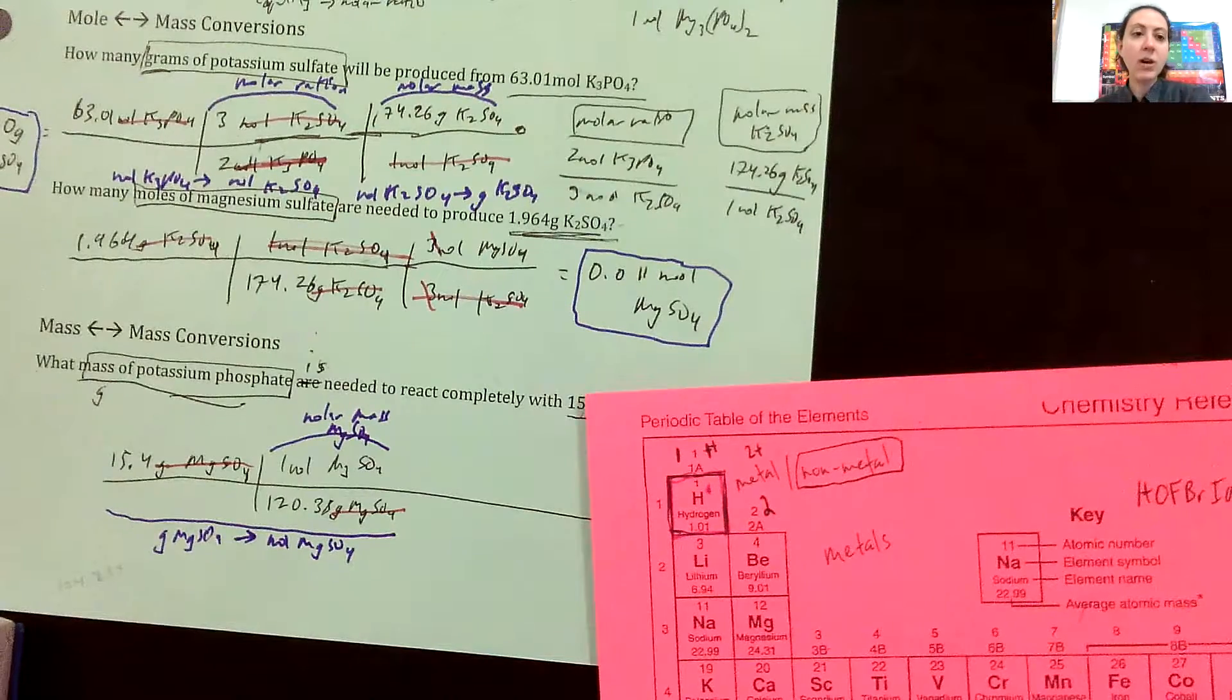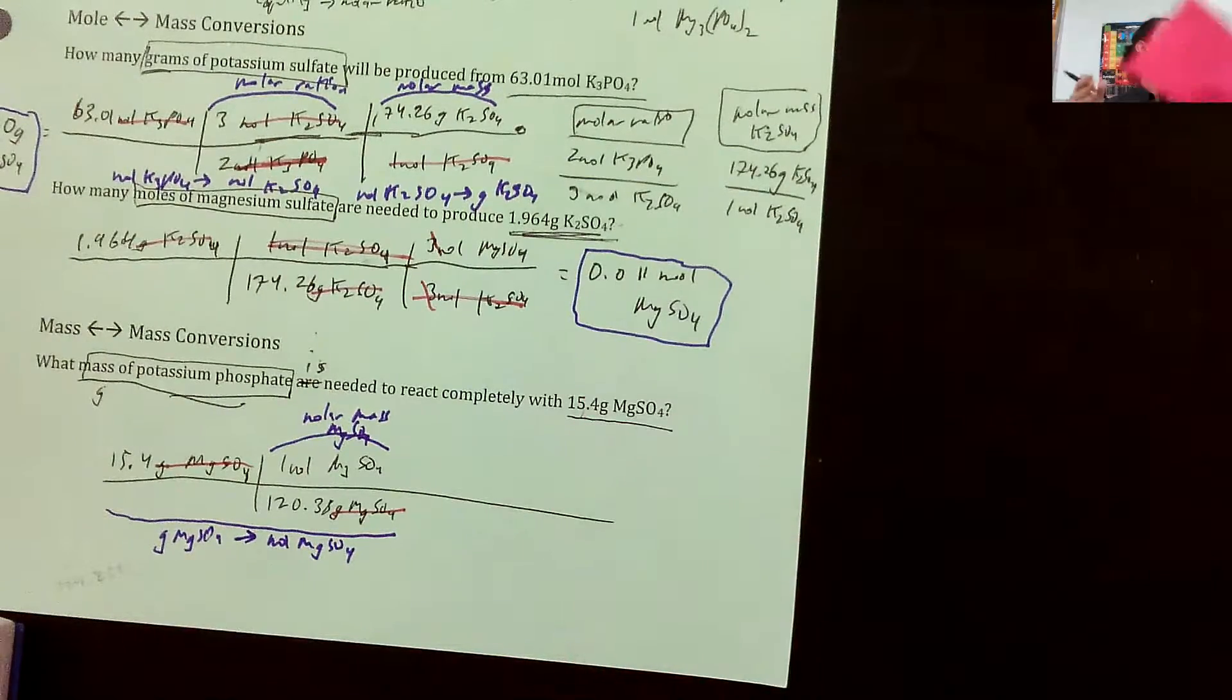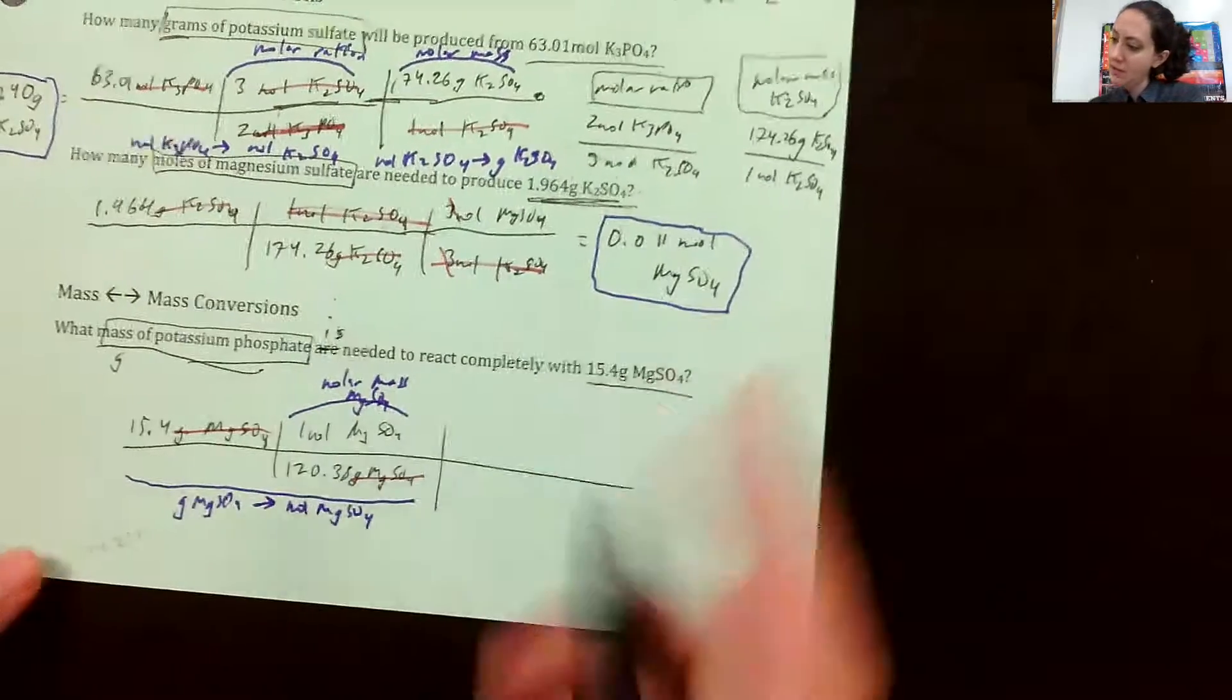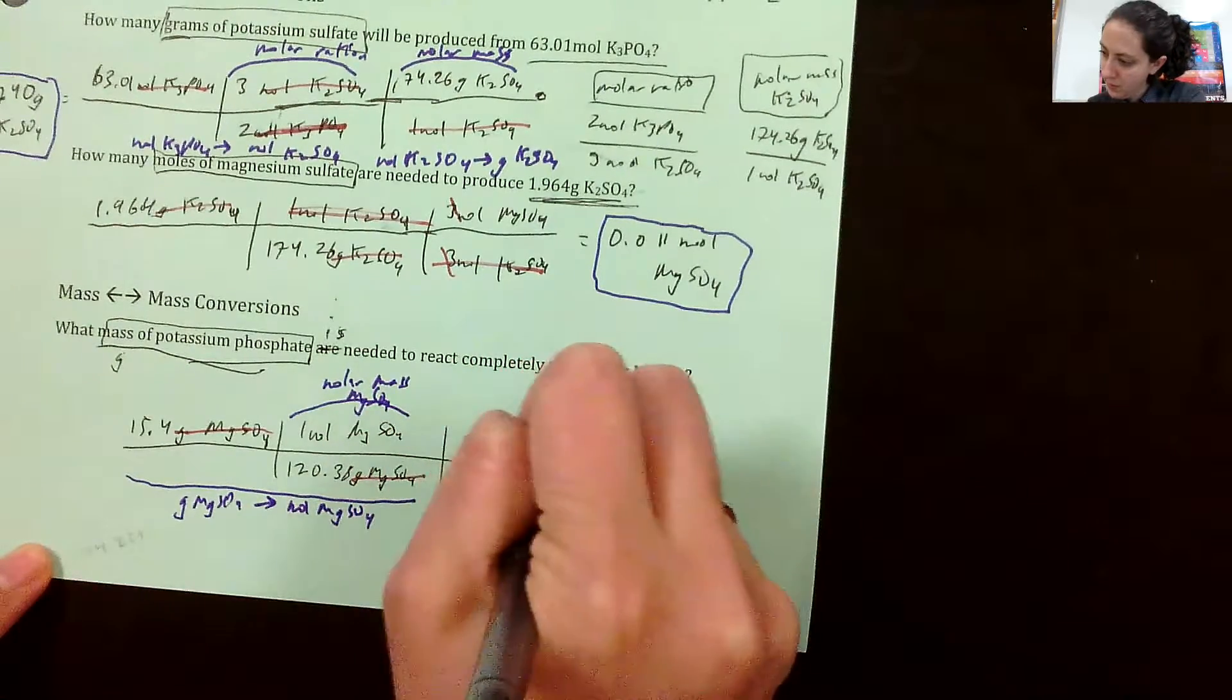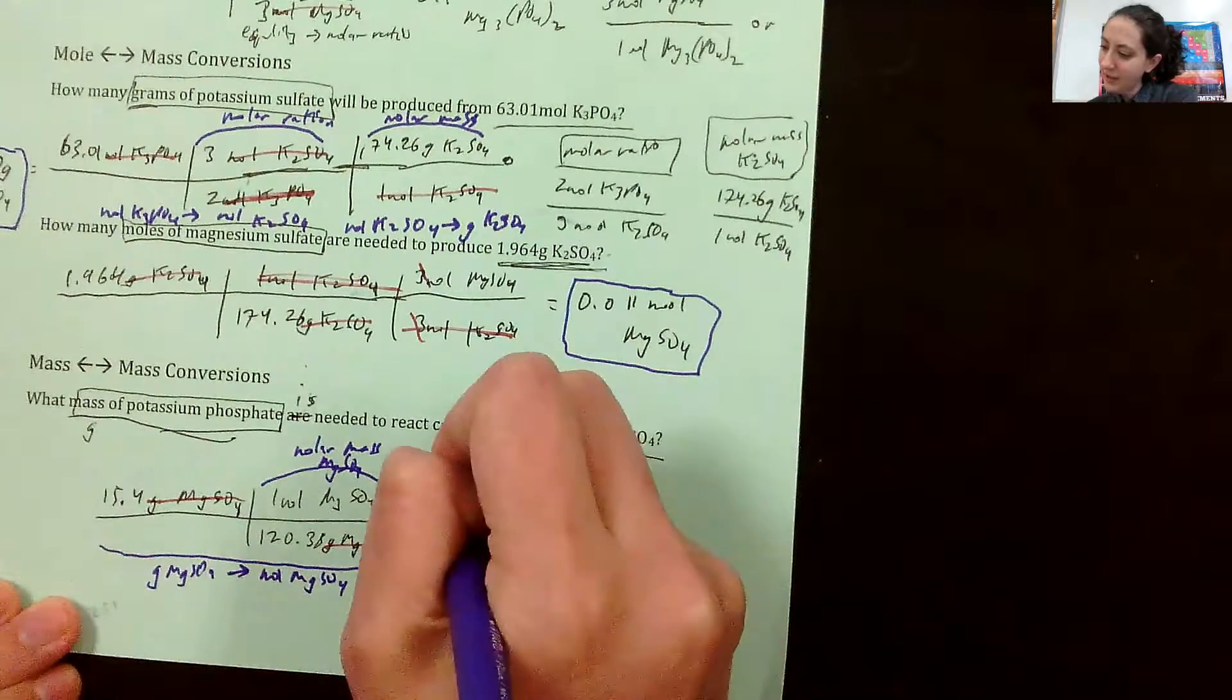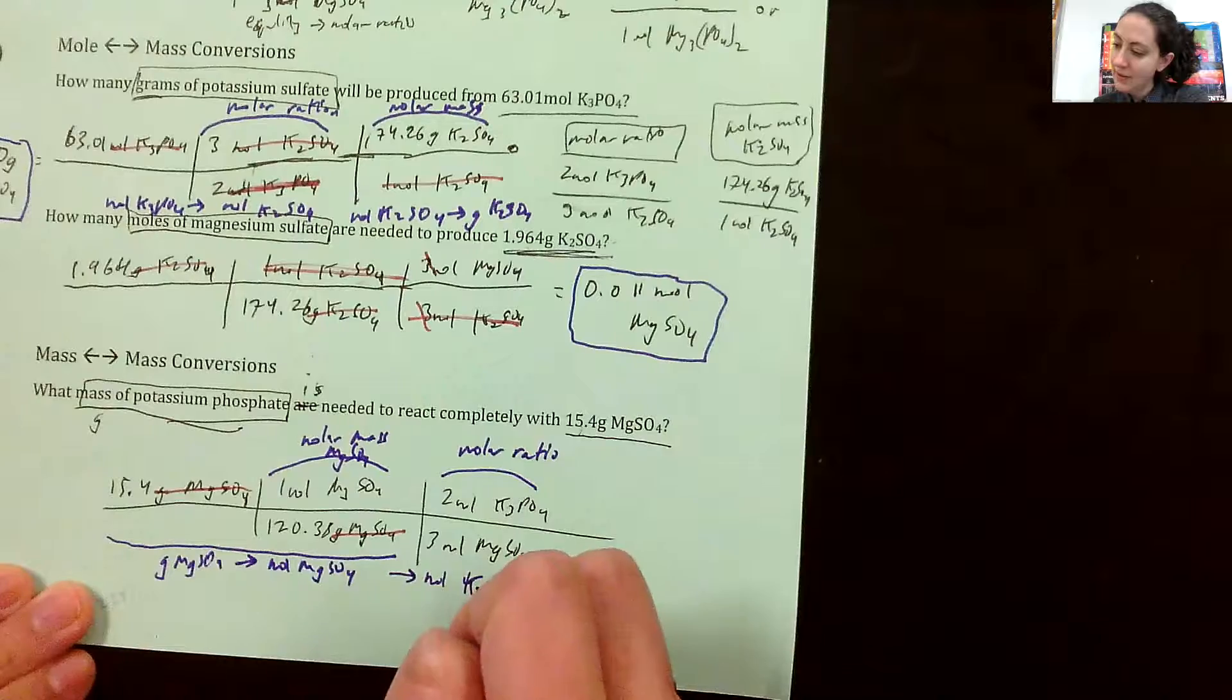So next step, we are looking for grams of potassium phosphate. There's no way for me to get straight from moles of magnesium sulfate to grams of potassium phosphate, but I can get to moles. So this is our molar ratio. Again, back to our equation up here, for every three moles of magnesium sulfate, I will need two moles of potassium phosphate. This right here is a molar ratio that we got from the balanced chemical equation. And then this step here is when we go from moles of magnesium sulfate to moles of potassium phosphate.